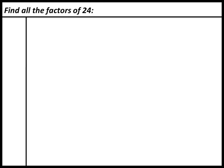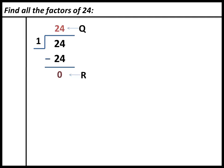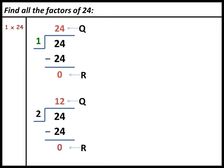Let's solve one more example: find all the factors of 24. To find the factors of 24, first we divide 24 by 1 and find out if the remainder is 0 or not. If we divide 24 by 1, we get quotient equal to 24 and remainder equal to 0. So 1 is a factor of 24. Then we divide 24 by 2 and get quotient 12 and remainder 0. So 2 is a factor of 24.